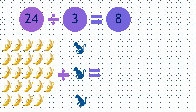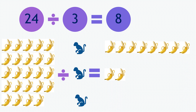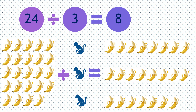Each monkey will receive 8 bananas: 1, 2, 3, 4, 5, 6, 7, 8. And next monkey: 1, 2, 3, 4, 5, 6, 7, 8. And the last monkey: 1, 2, 3, 4, 5, 6, 7, 8.